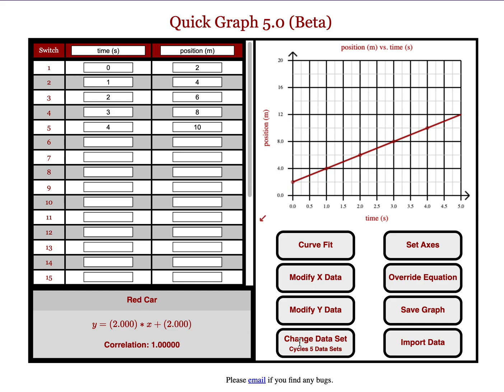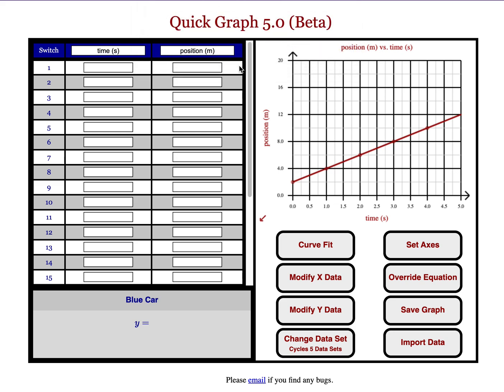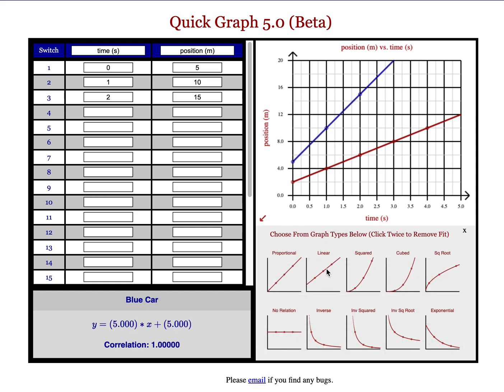I can go to this new button that I added, Change Dataset. It'll now change me to Dataset 2, which I'm going to call my blue car. I then put in my data for the blue car, and the blue car, you can see, was traveling much faster. And again, I can Curve Fit it, and I get my graph for the blue car.